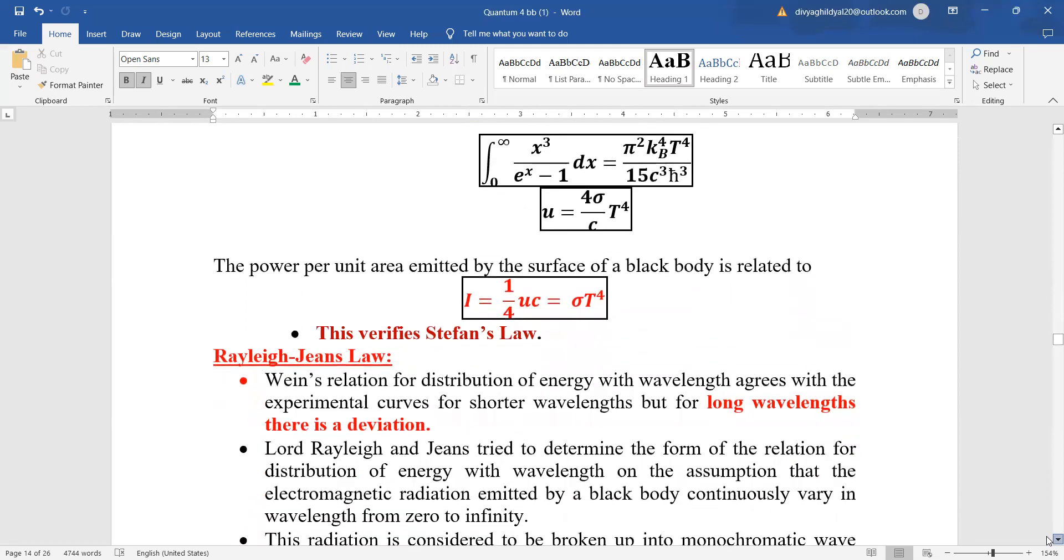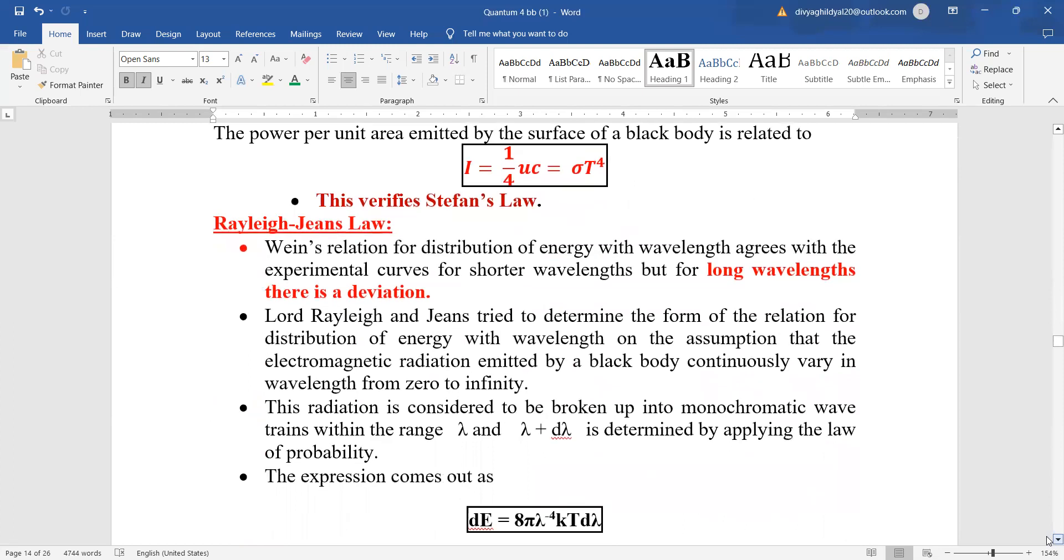Next, Rayleigh genes law. Wayne's relation for distribution of energy with wavelength agrees with the experimental curves for shorter wavelengths. But for the longer wavelengths, they were failing in some aspects. Then came into being the Planck's theory of quantum physics.